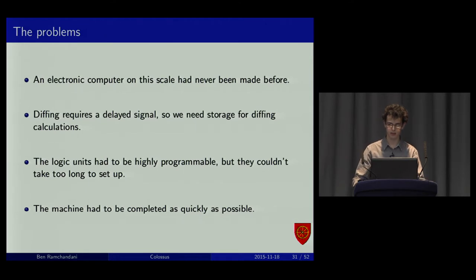There were a few issues they had to overcome. If you want to diff characters, you need the previous character that was used. So, you need a delayed signal. That's from storage. You don't want to replicate all the creation logic. And there was a pretty tight time scale. In the end it was completed in 10 months. Which is pretty fast. Considering ENIAC took a few years.